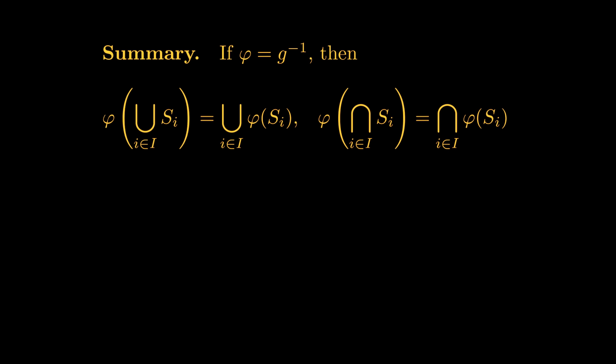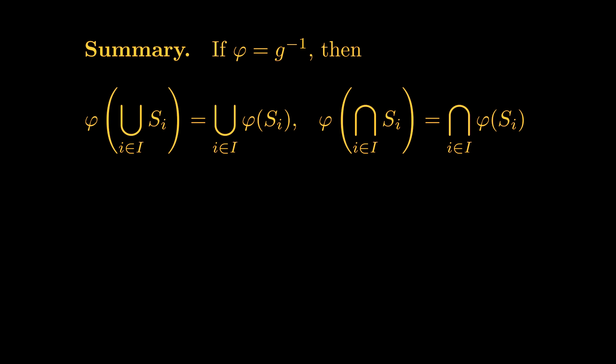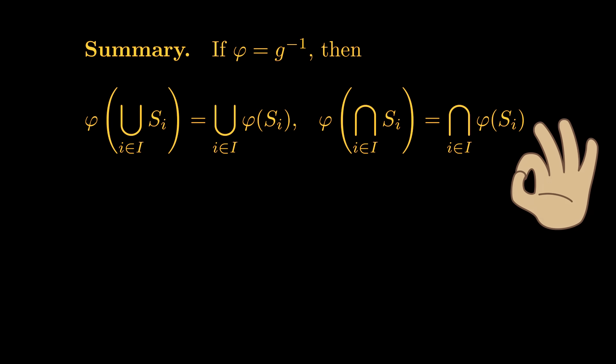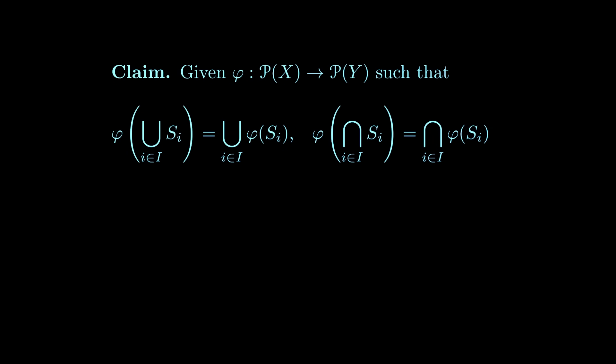Now, we know that preimage functions preserve arbitrary unions and intersections. Is that enough to characterize them? Yes. Given a function phi from the power set of X to the power set of Y that preserves unions and intersections, we can show that phi must be the preimage of some function g from Y to X.